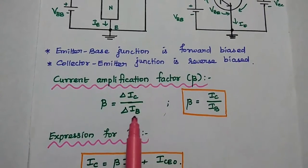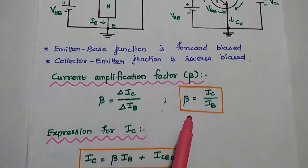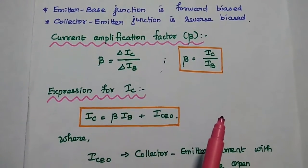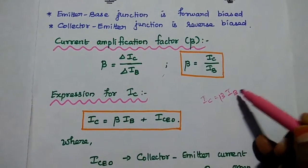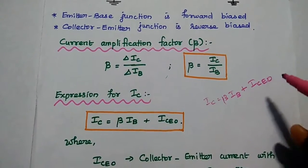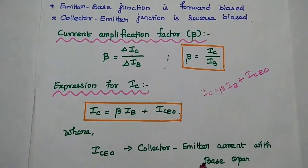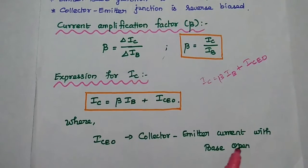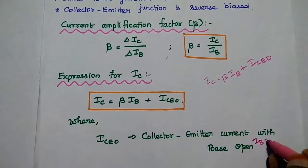Beta can also be represented in terms of changes in output current to the change in input current. The expression for output current IC is equal to beta into IB. In addition to that, we have the reverse saturation current due to the reverse bias condition when the input is open. ICEO is the collector emitter current with base open, meaning there is no input.